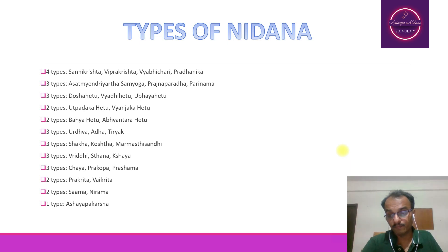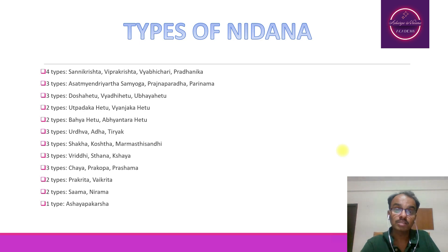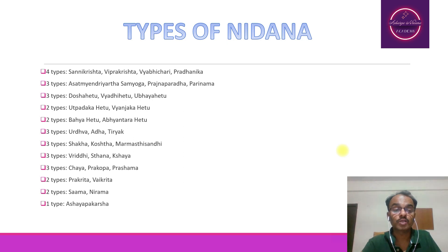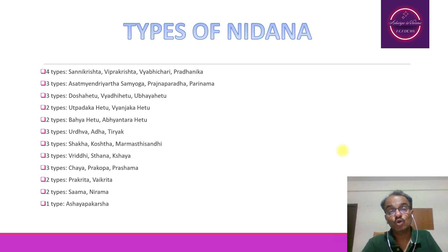Regarding the types of the Nidana, Madhukosha says these are the several classifications of Nidana. Four types of Nidana: Sannikrishtha, Viprakrishtha, Vibhichari, and Pradhanika. Three types of the Nidana: Asatmendriyartha Sanyoga, Pradhyaparadha, and Parinama. Three types of the Nidana: Doshahethu, Nyadhihethu, and Ubhayahethu. Two types of the Nidana: Utpadakahethu and Vyanjakahethu.